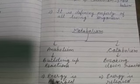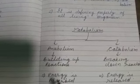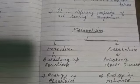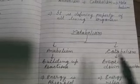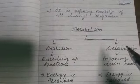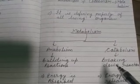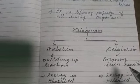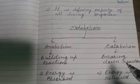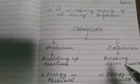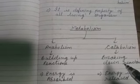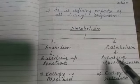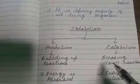In anabolism, energy is absorbed. Catabolism, on the other hand, is called breakdown reactions — it is the breaking down of complex substances.